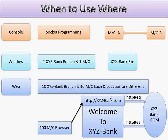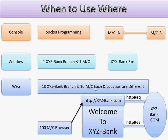Let's look at an example. There is a bank called XYZ Bank and they say create one banking software. The requirement is: the bank has only one branch and one branch has only one PC. So here I go for a window based application. I create one software called XYZ Bank dot exe, I install my software on that particular machine, and my software runs fine. After some time the bank requirement changes - now the bank has 10 branches, each with 10 machines, and locations are also different. Now I have a hundred machines and it is not possible for me to install XYZ Bank dot exe everywhere.